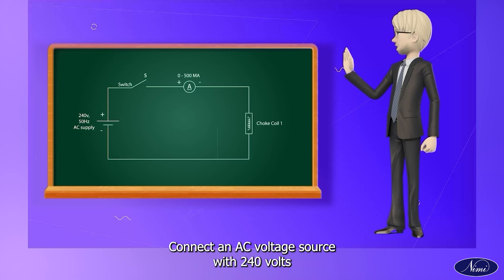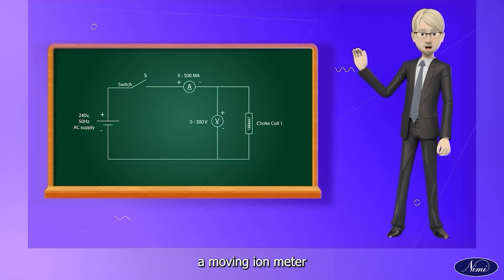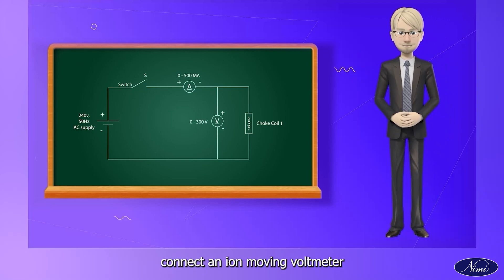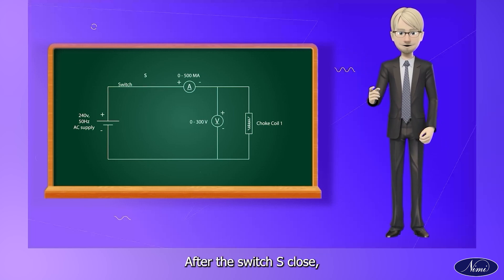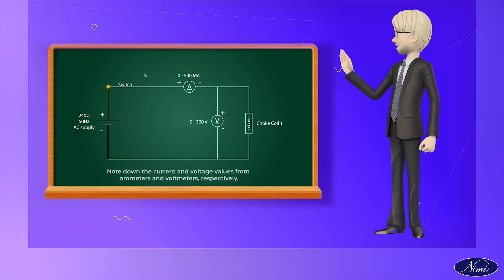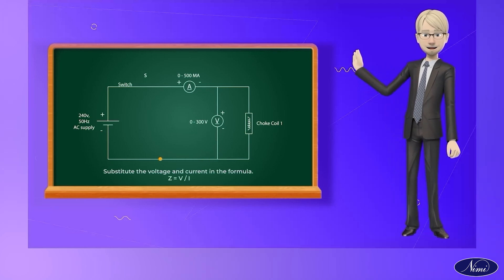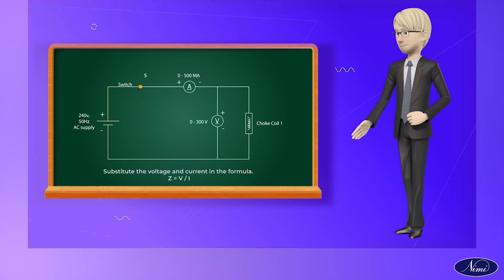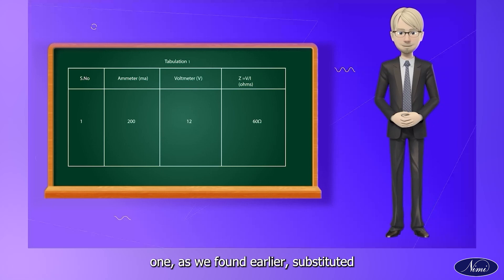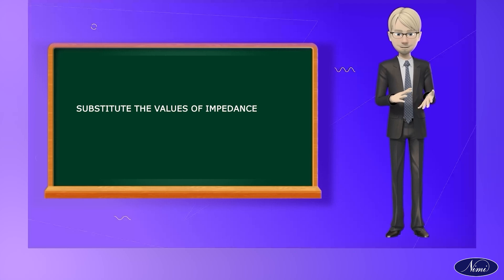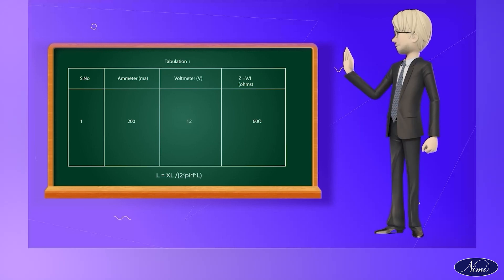Connect an AC voltage source of 240V and 50Hz frequency with a switch, a moving iron ammeter, and a choke coil all in series. Connect a moving iron voltmeter ranging from 0 to 300V in parallel to the circuit after the switch S. Close the switch S. Note down the current and voltage values from the ammeter and voltmeter respectively. Substitute the voltage and current in the formula Z = V / I. Find XL from the impedance using the resistance value from tabulation 1. Then substitute the values of impedance and resistance in the formula to find XL, and calculate inductance as L = XL / (2πF).